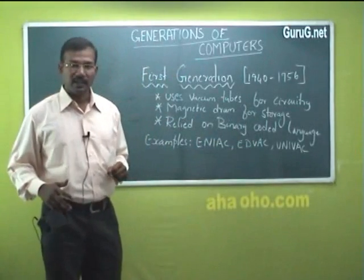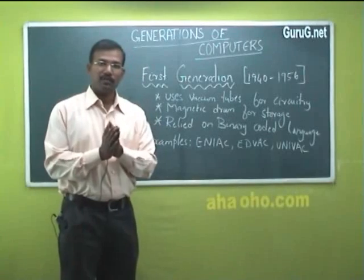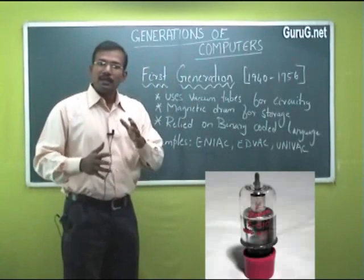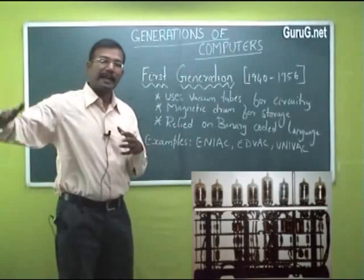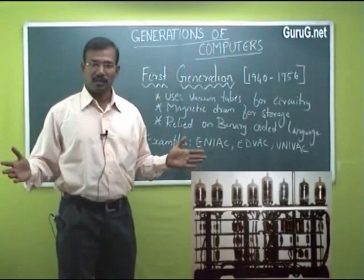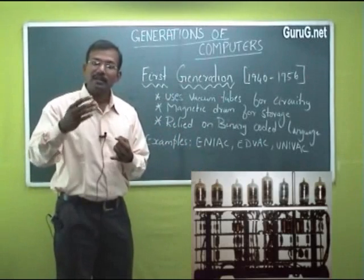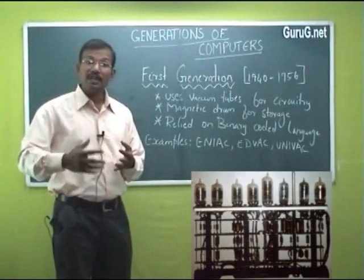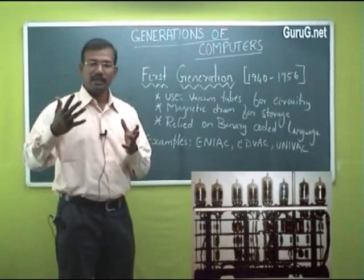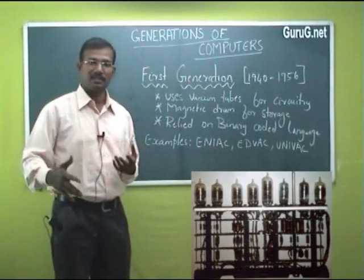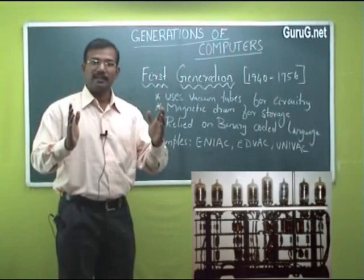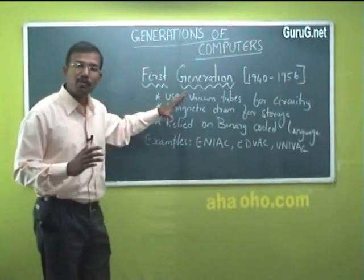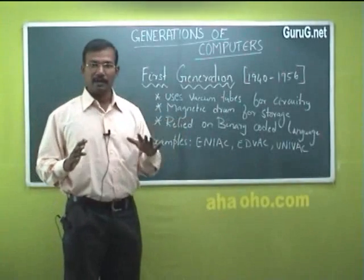EDVAC, and UNIVAC. Now we can see the characteristics of the first generation computer. Since vacuum tubes were used for the entire circuitry, these computers were very large and their installation occupied more space. Since they used vacuum tubes, they also emitted very large amounts of heat, so air conditioning systems were required. The systems were also prone to hardware failure, making them unreliable.